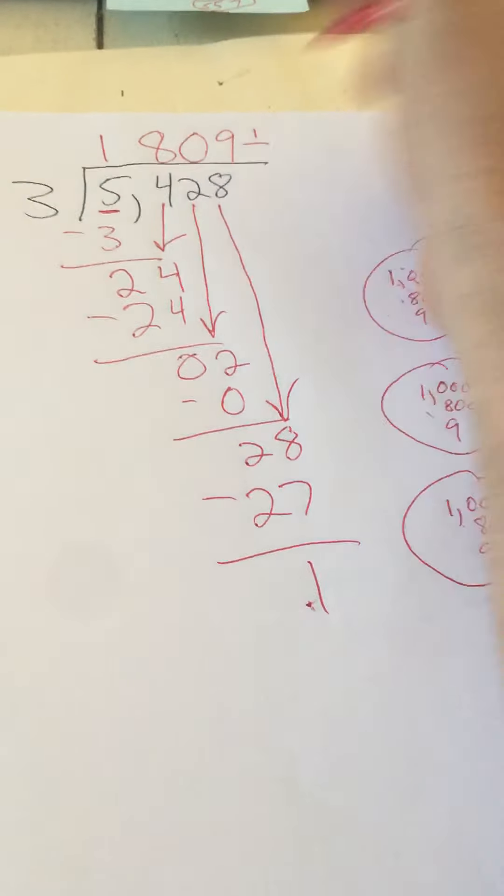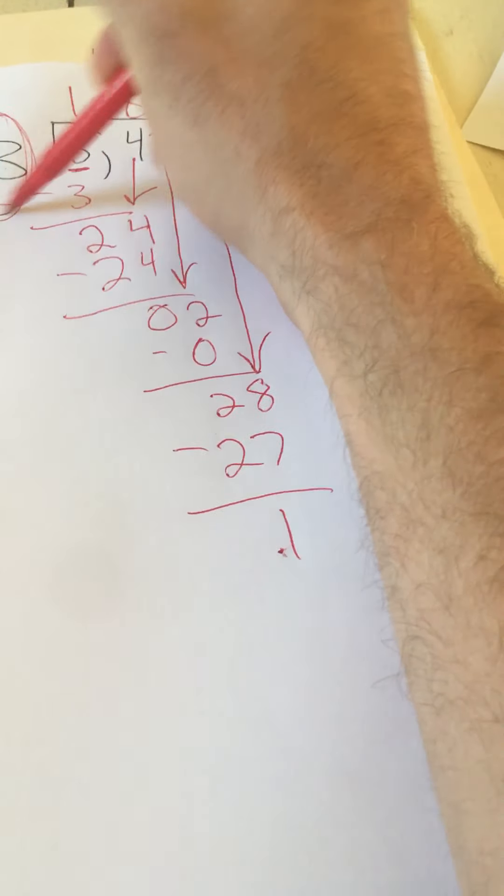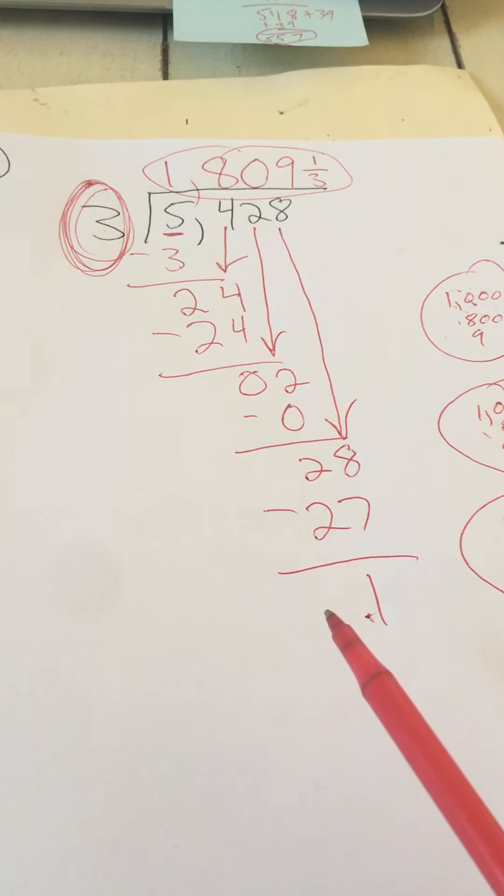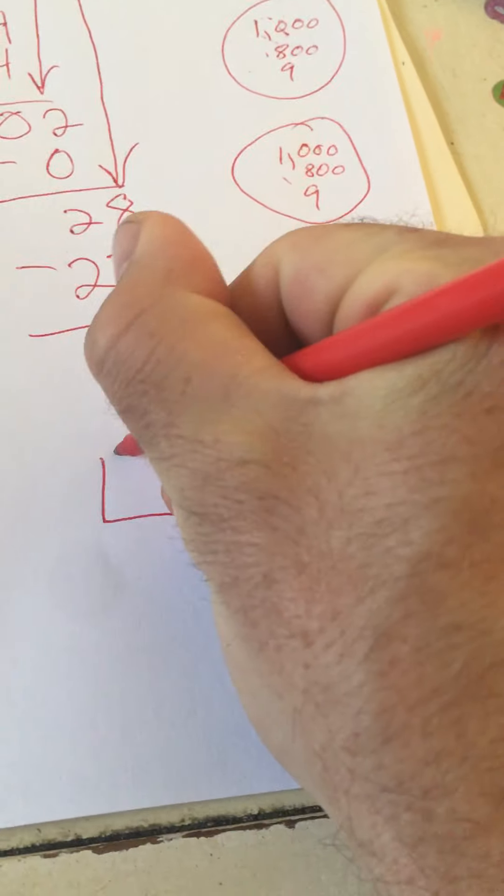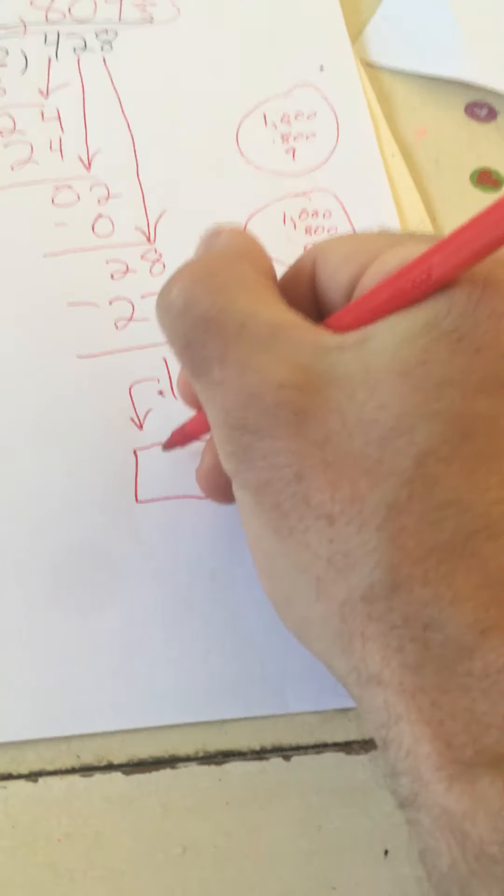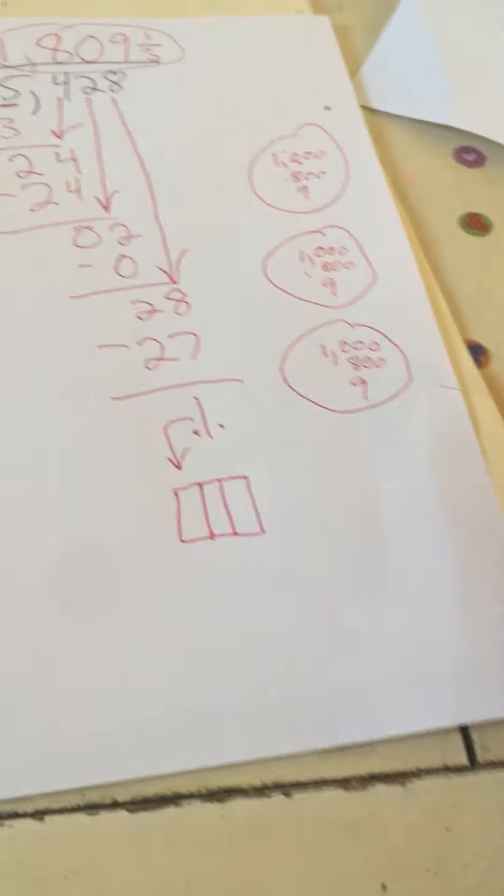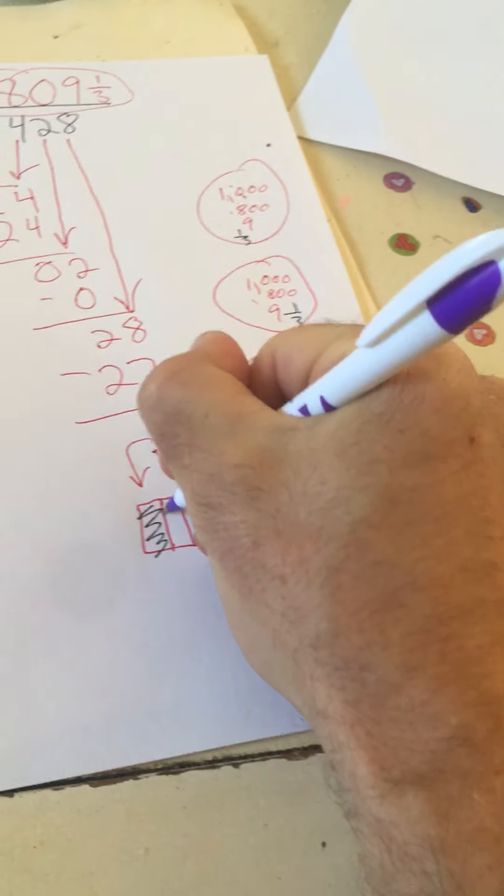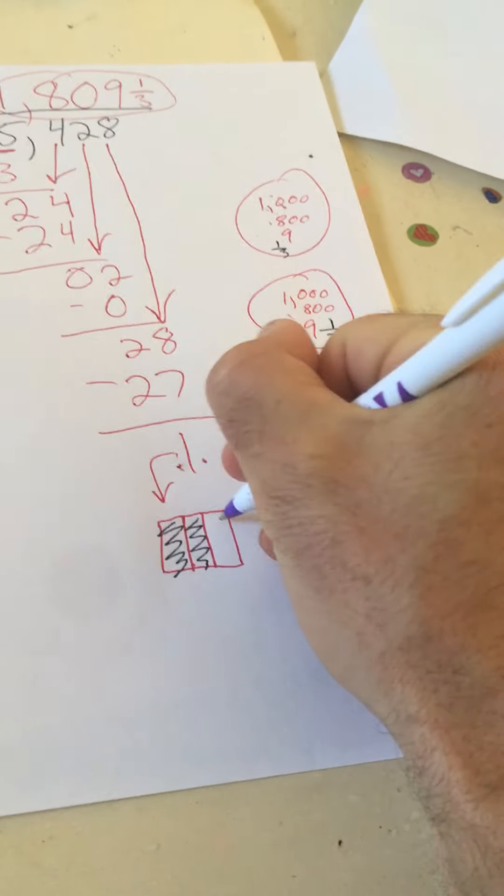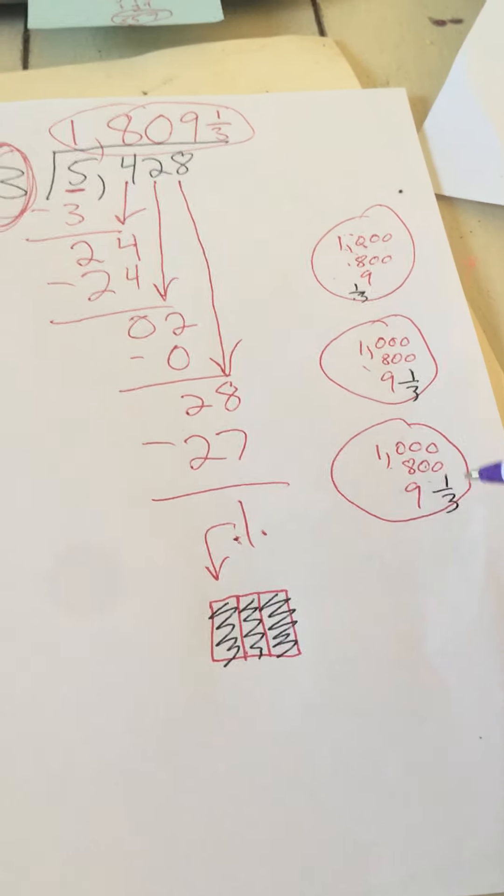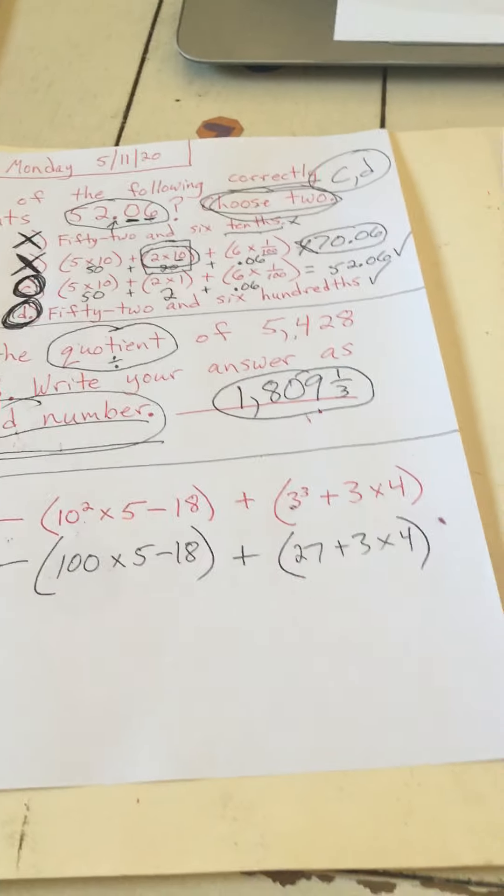Now our remainder is going to become the numerator of our fraction. And the divisor, the number we divided by, is going to become the denominator. So the best answer here is 1,809 and one third. Because now, we have one as a remainder. So if we were going to take this remainder, which is one, and split it into these three groups evenly, we're going to put one third into each group. So this group will get one third, this part. This group will get one third, this part here. And this group will also get one third. And now that remainder has been used. Now it's gone. We included it into these as a fraction.